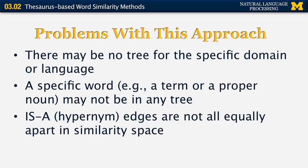There are some problems with this approach. The first is that there may not be a tree or forest representation for a specific domain — for example, the medical domain, the financial domain, or any particular language. Of the other 7,000 languages in the world, there are WordNet-type databases for only a few dozen. Also, a specific word — for example, a term or proper noun — may not be in any tree. It may be something new or too specific to be included in any database.